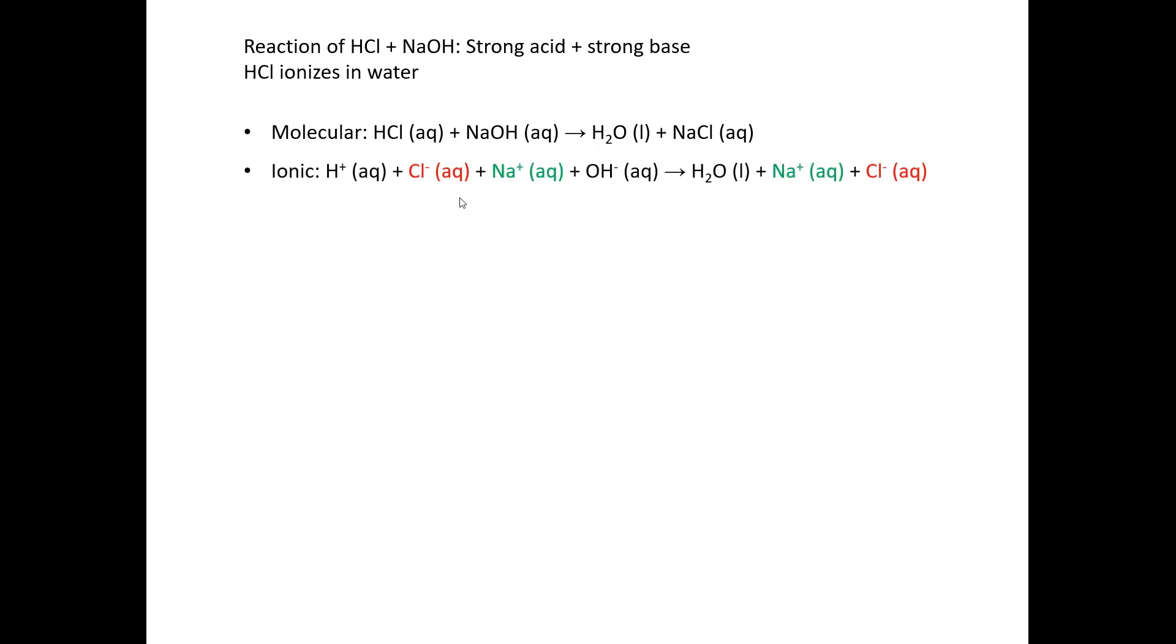Now when I do the ionic equation, because HCl is a strong acid, it's going to ionize completely. Because sodium hydroxide is a water-soluble hydroxide base, it's going to dissociate completely into its ions. Water is a non-electrolyte, so it remains intact. Sodium chloride is a water-soluble ionic compound, so it is written as being ionized, as being dissociated. I've gone ahead and color-coded my spectator ions. Sodium appears the same on both sides of the equation, chloride appears the same on both sides. So I can cancel them out, and I get the net ionic equation, which is simply H⁺ + OH⁻ → H₂O.